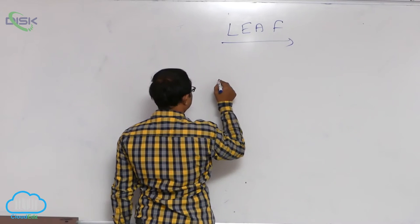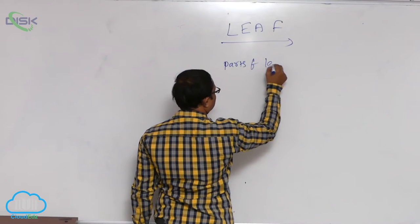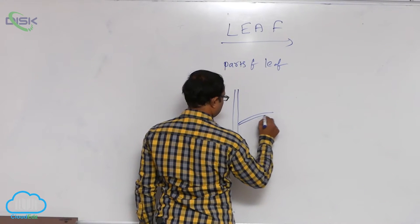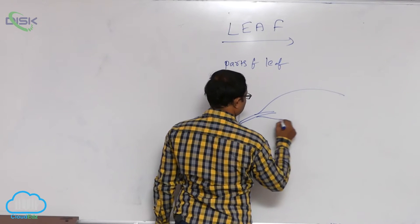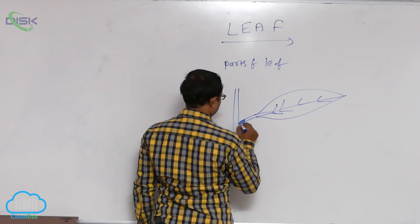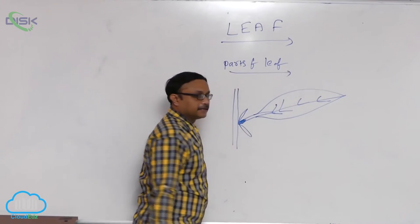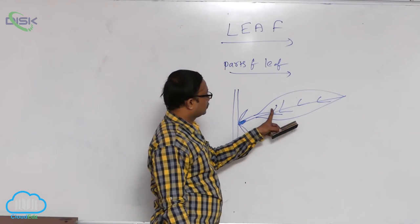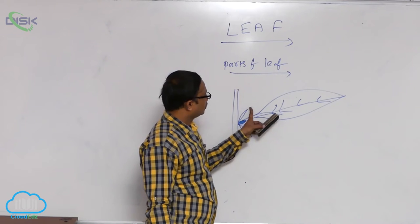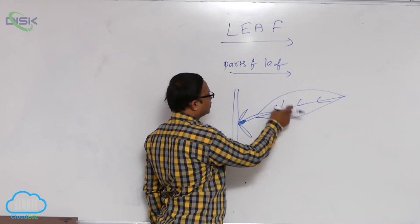Leaf. Parts of leaf. Generally, a leaf is a laterally expanded, green, flattened structure. In a plant, a leaf is laterally expanded and green, flattened structure, and such a structure is known as the leaf.